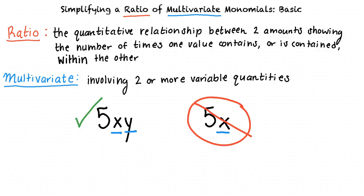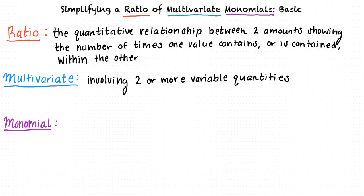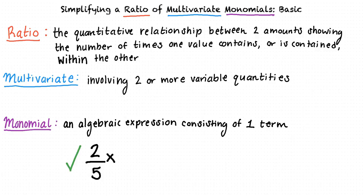The last word we are going to define is monomial. Monomial means an algebraic expression consisting of one term. For example, 2 fifths x is a monomial, whereas 2x plus 3y would actually be a binomial because it consists of two separate terms, the 2x and the 3y, and thus is not a monomial.